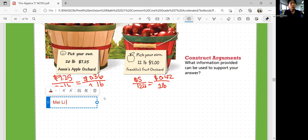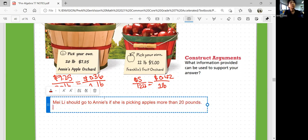So Mei-li should go to Annie's if she is picking apples more than 20 pounds. She should go to Franklin's if she is picking apples less than 20 pounds.